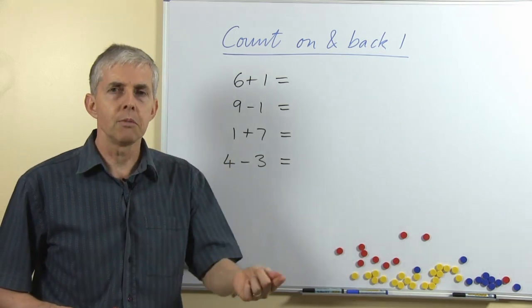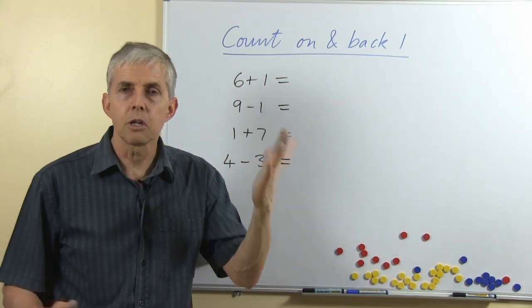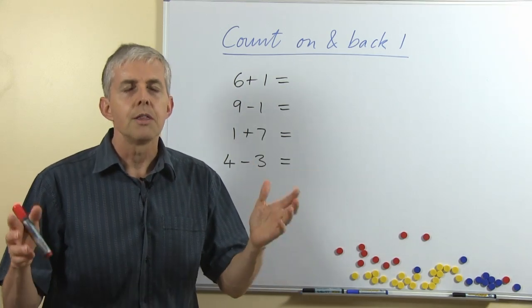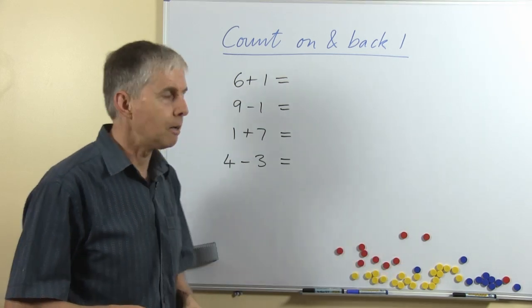...the students should be familiar with the number that comes after, for example, 6. If you're counting from 6 you could ask students, close your eyes, think of the numbers up to 6, don't say anything, what comes after 6, that sort of thing.